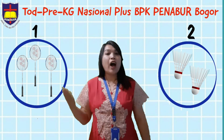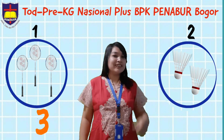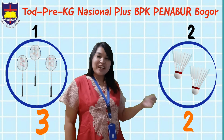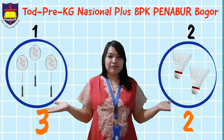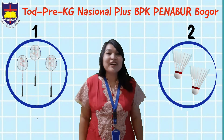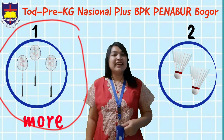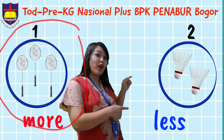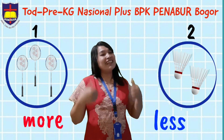Well done! How many badminton rackets? Good! How about circle number two — the shuttlecocks? Well done! Which one has more — circle number one or circle number two? Good job! Circle number one! How about which one has less? Of course, circle number two! Well done!